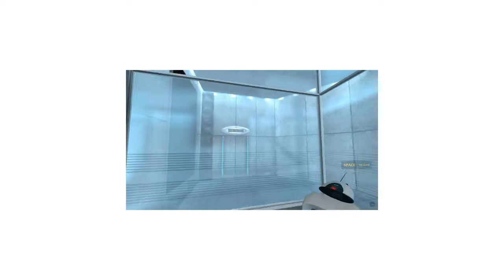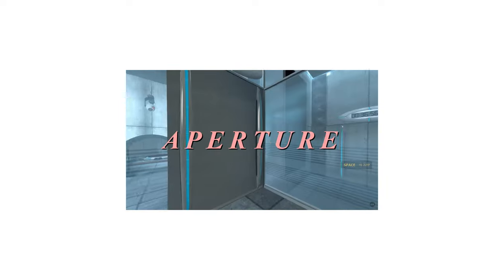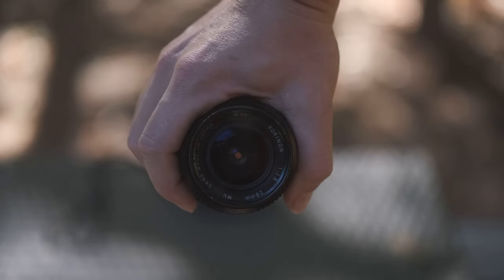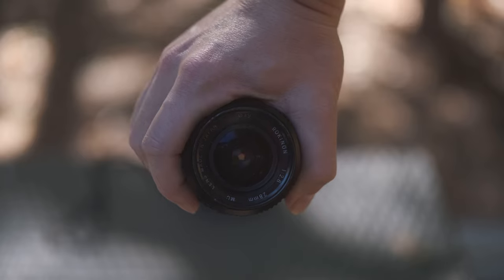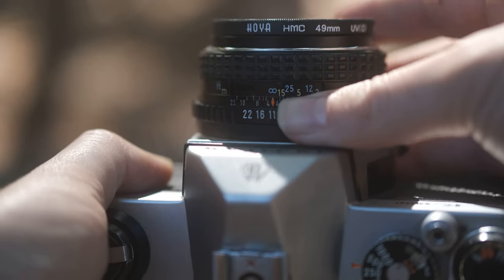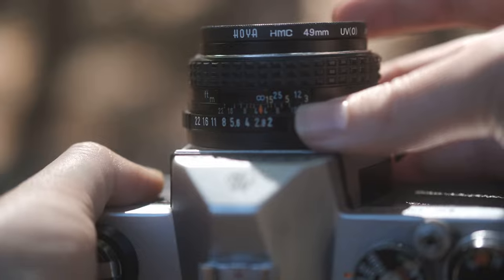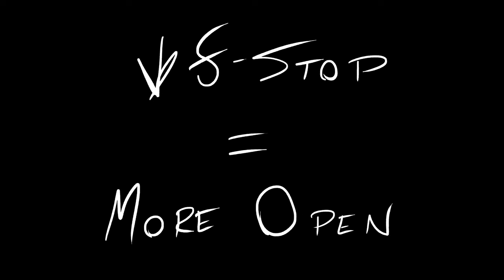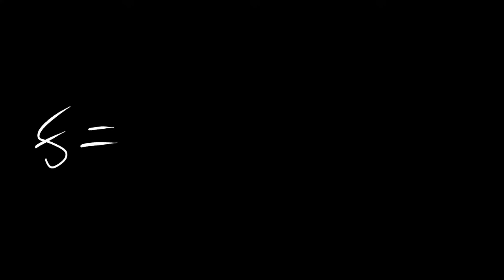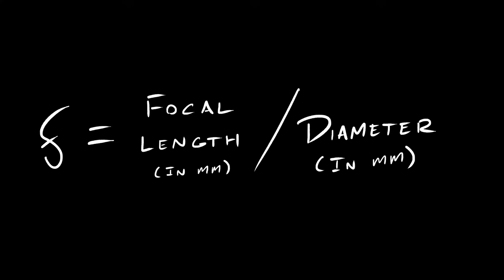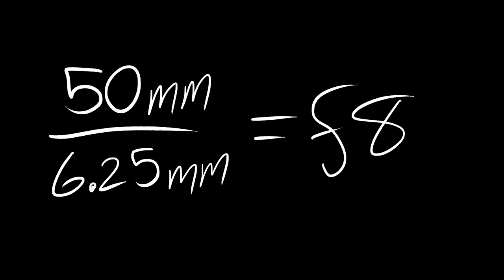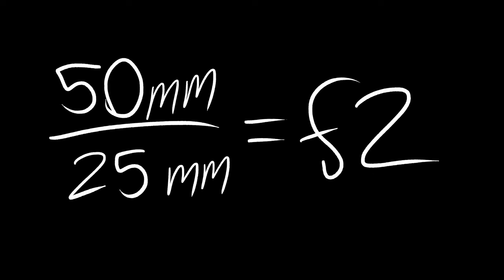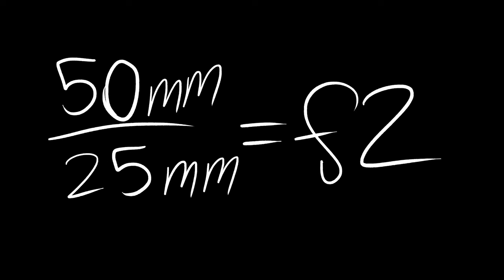Welcome to the Aperture Science Computer Aided Admission Center. Aperture is a dope-ass word that describes how wide the opening in your lens is when the PCT is exposed. It's measured in f-stops, and one thing that confused the hell out of me when I was starting is the lower the f-stop, the more open your lens is. That's because the f-stop number is determined by the focal length of your lens divided by the diameter of the opening. So if you have a 50mm lens with a 6.25mm opening, you're shooting at f8. If you have a 25mm opening, you're shooting at f2.